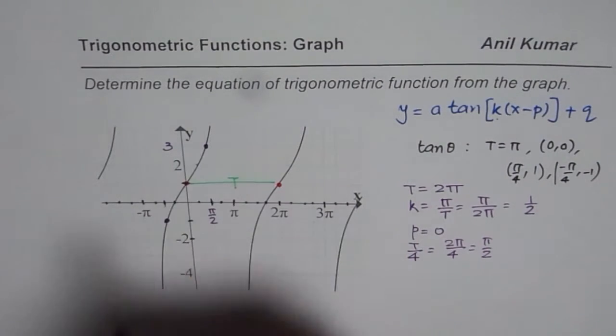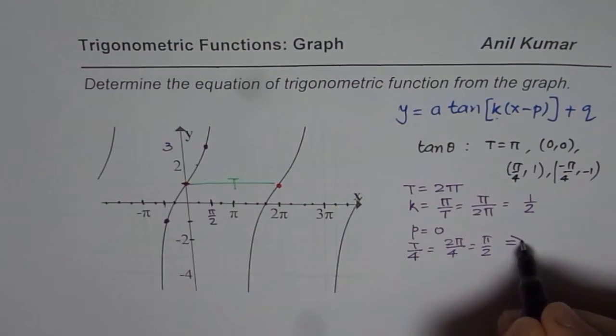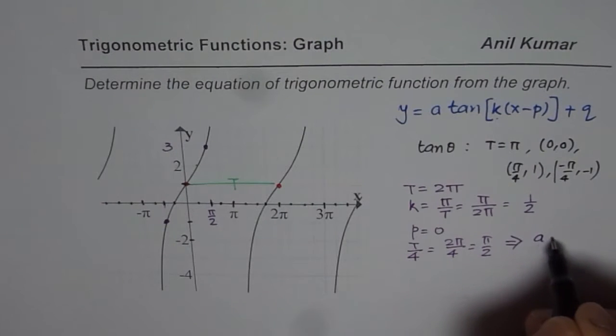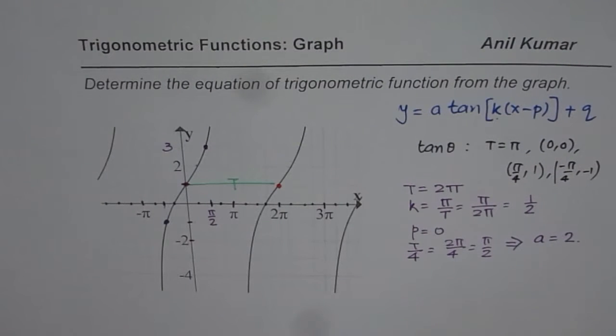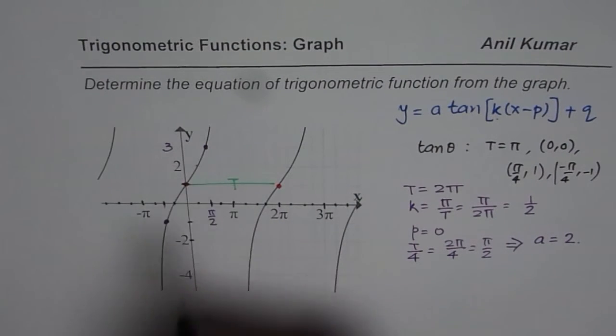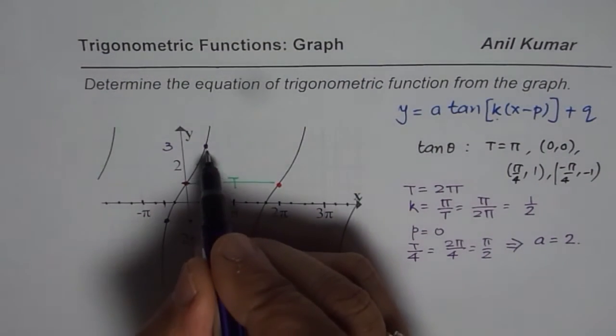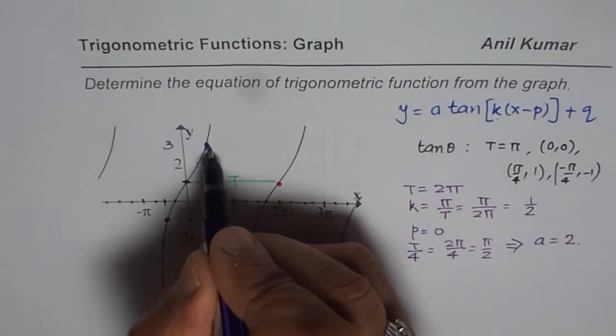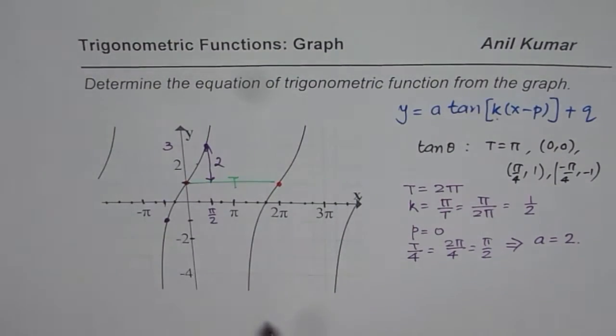Since this value is 2 units away, we can say that a is equals to 2. Do you understand? Since we have a point at pi by 2, which is 2 units away, so this difference is 2, not 1.